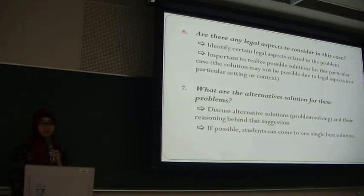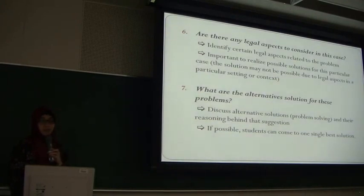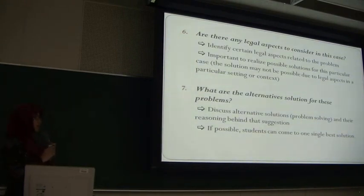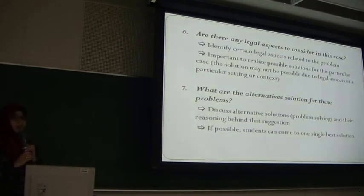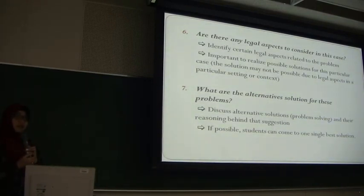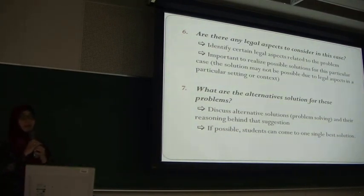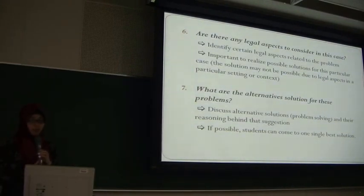At the end, step seven, we want them to come up with some alternative solutions for the problems they have found. This method is not focused on problem solving — that's the difference with clinical ethics. We want students to practice how to reason and identify ethical issues. But in the seventh step they usually come up with many interesting alternatives for problem solving, though it's not necessary for them to come up with one single best solution.